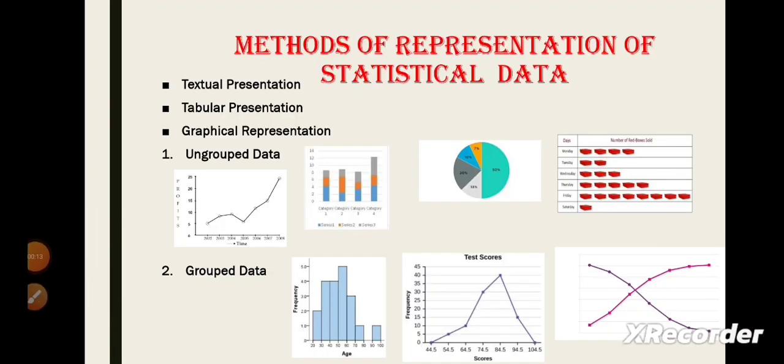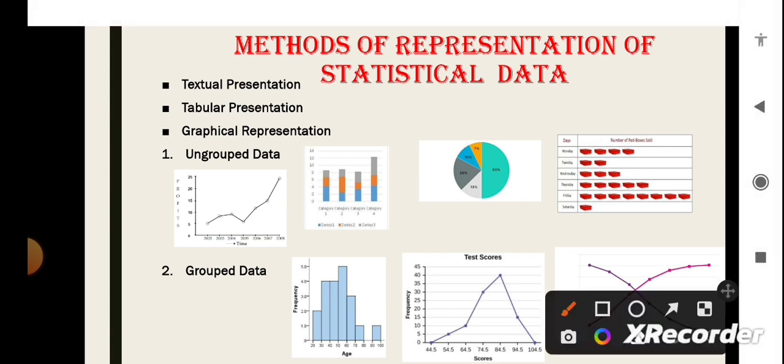As we know that presentation of data is very important. So, there are three ways in which the statistical data is presented. First, if they are presented in the descriptive form, they are known as text representation. Second, if they are presented in systematic rows and columns in a table, then it is known as tabular presentation. Third one is the graphical presentation in which they are presented by graphs and charts.